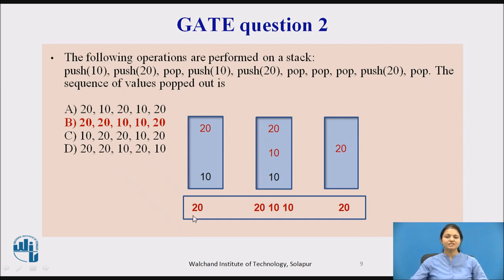So the popped sequence is 20, 20, 10, 10, 20. This matches option B — 20, 20, 10, 10, 20. So B is the correct answer.